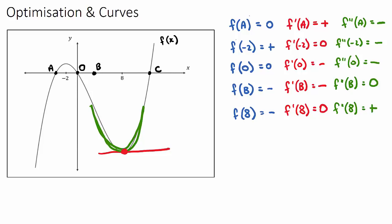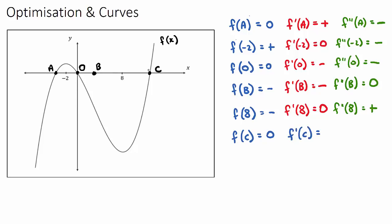The last point is at point C. f(C): the y-value right here will be 0. f'(C): the point will be sloping up, so it'll be positive. And the concavity at C will also be positive, as it's part of our happy face here. So f''(C) will be equal to some positive value.